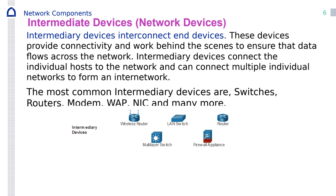The intermediate devices we have already mentioned: routers, switches, wireless router. They provide connectivity and work behind the scenes to ensure that data flows across the network. They connect individual hosts to the network and can connect multiple networks to form an inter-network. The most common intermediary devices are switches, router, modem, WAP — wireless access point — and NIC.